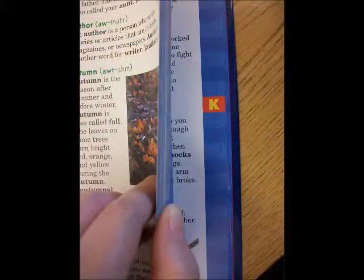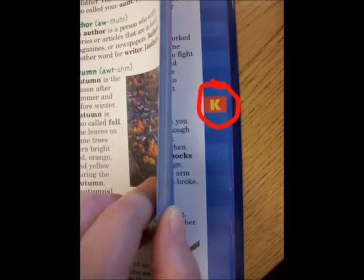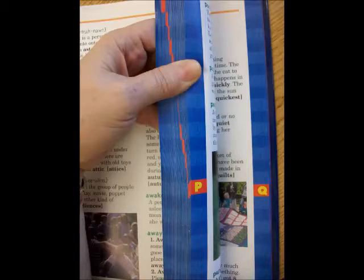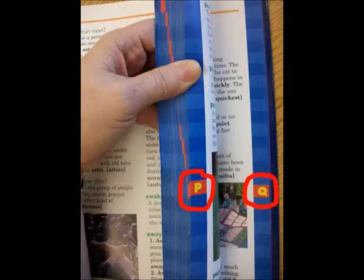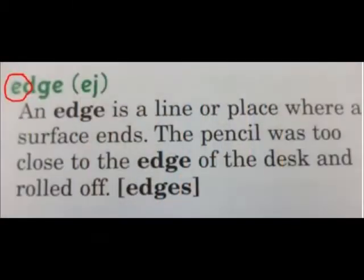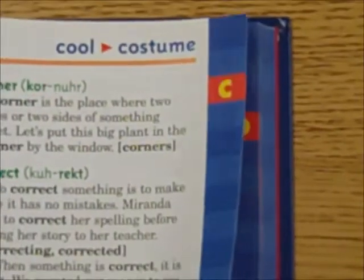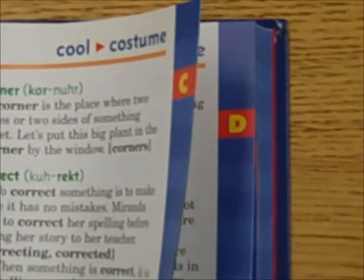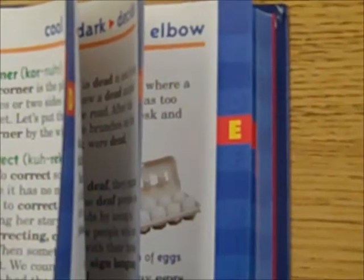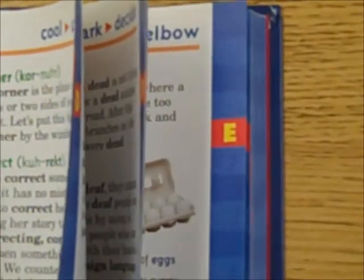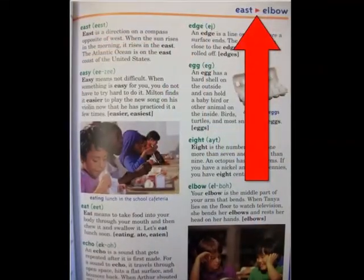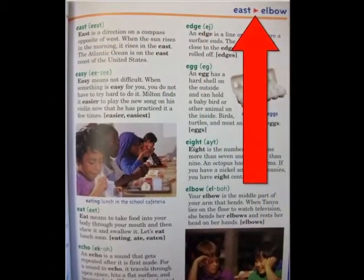Many dictionaries print the alphabet on the edge of each page. This helps you find the first letter of the word you are looking for. For example, the word edge begins with E. The letter C followed by the letter D on the edges of the pages lets you know that you are very close to finding words that begin with E.